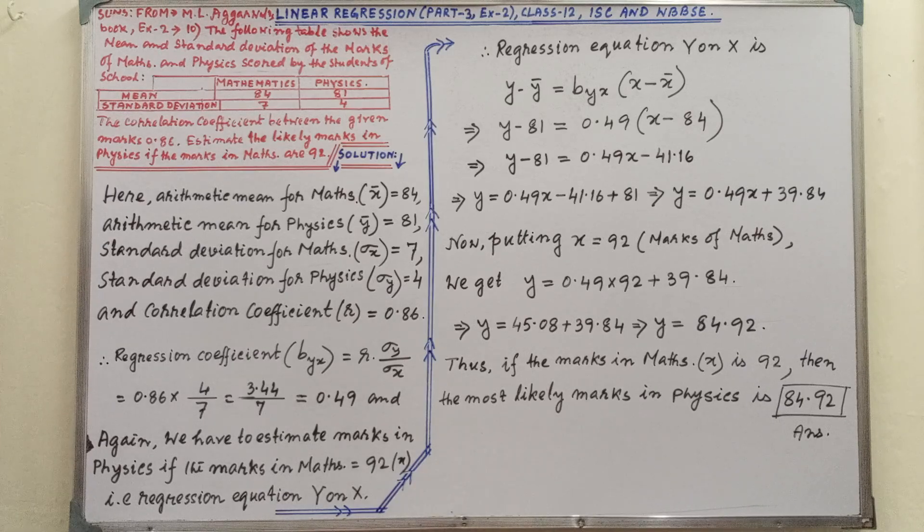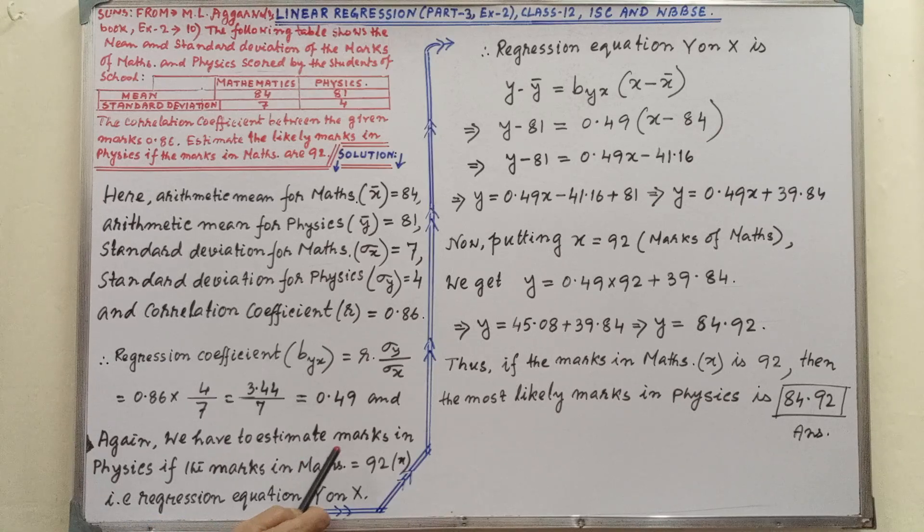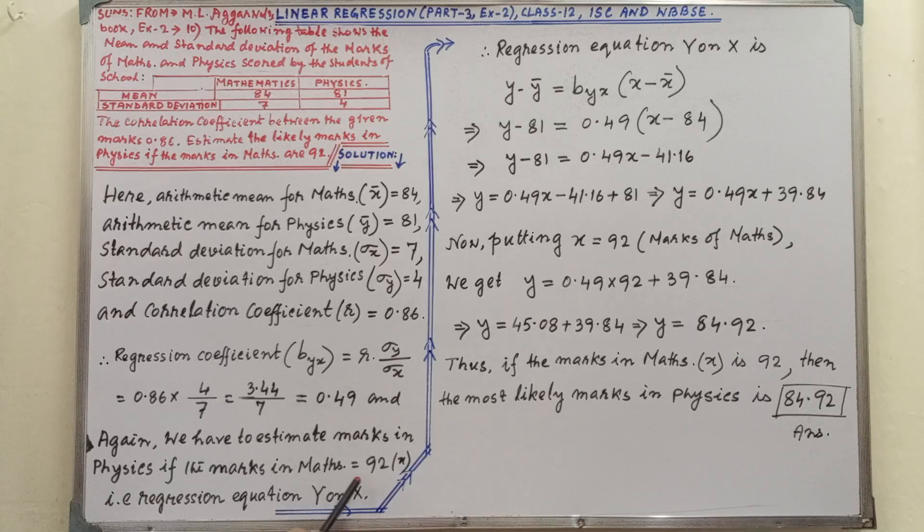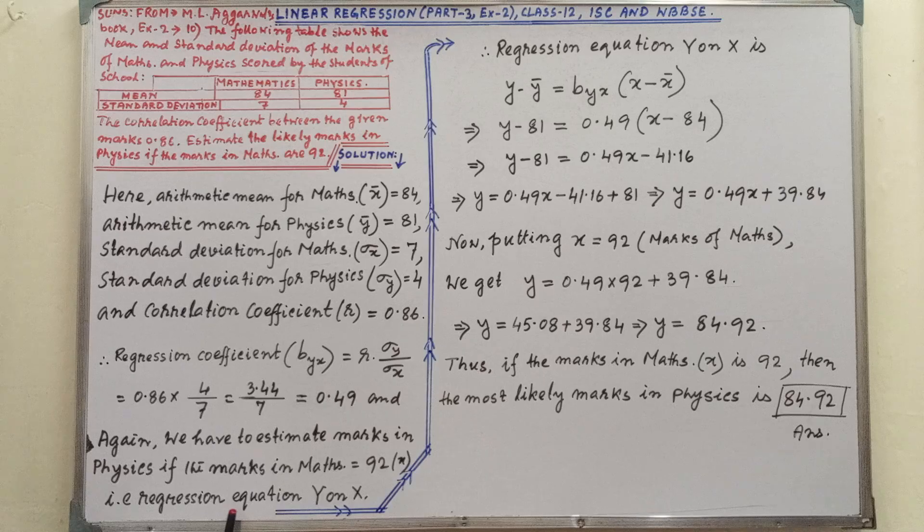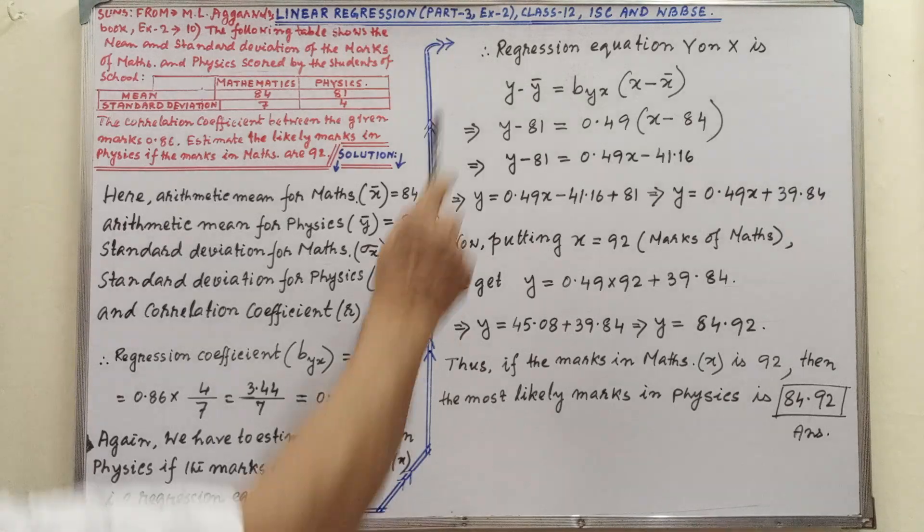And again, we have to estimate marks in physics if the marks in maths is given. Marks in maths given, we have to find out the marks in physics. That is regression equation y on x.